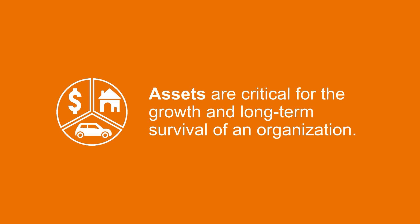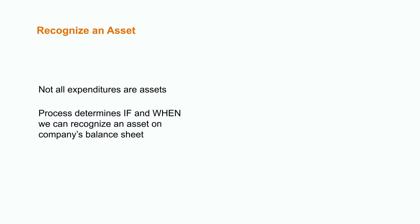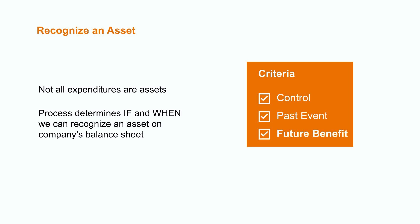The first piece of the puzzle is asset recognition. Since not all expenditures are considered to be assets, the asset recognition process helps us determine if and when we can recognize an asset on the company's balance sheet. In order to do so, the resource must meet a set of specific criteria set out in the accounting standards. According to those standards, an asset is a resource that is controlled by the company as a result of past events, from which future economic benefits are expected to flow to the company.